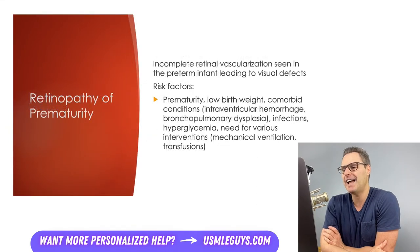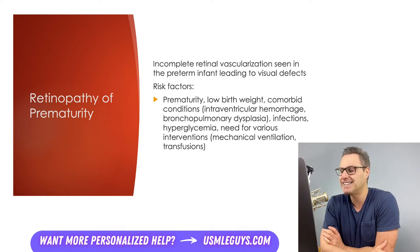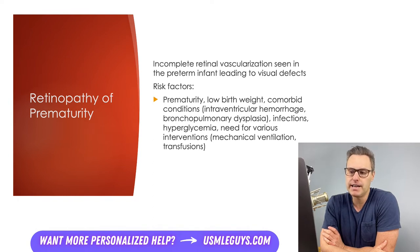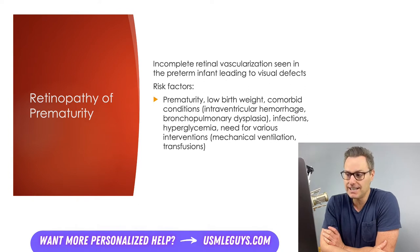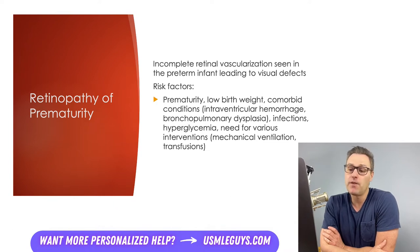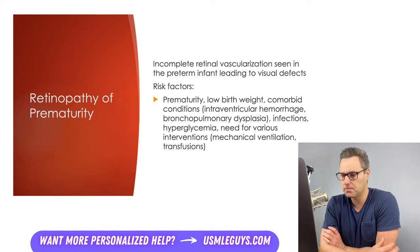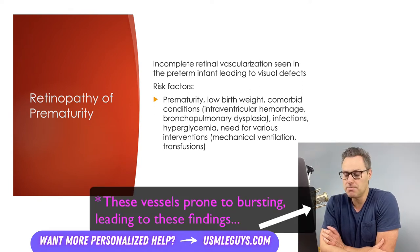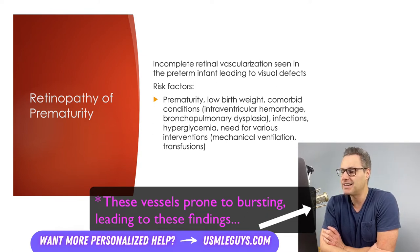Next up, let's take a look at retinopathy of prematurity. This condition arises when there's incomplete retinal vascularization seen in the preterm infant, leading to visual defects. Initially there will be some sort of insult to the vasculature of the eye — this could be oxygen toxicity, a lack of adequate perfusion due to hypoxemia, or hypotension. Following this insult, new blood vessels will grow abnormally out from the retina into the vitreous, that gel-like substance in the eye, which can cause edema and hemorrhage and possibly lead to fibrovascular tissue that can contract, tear, and distort or detach the retina.